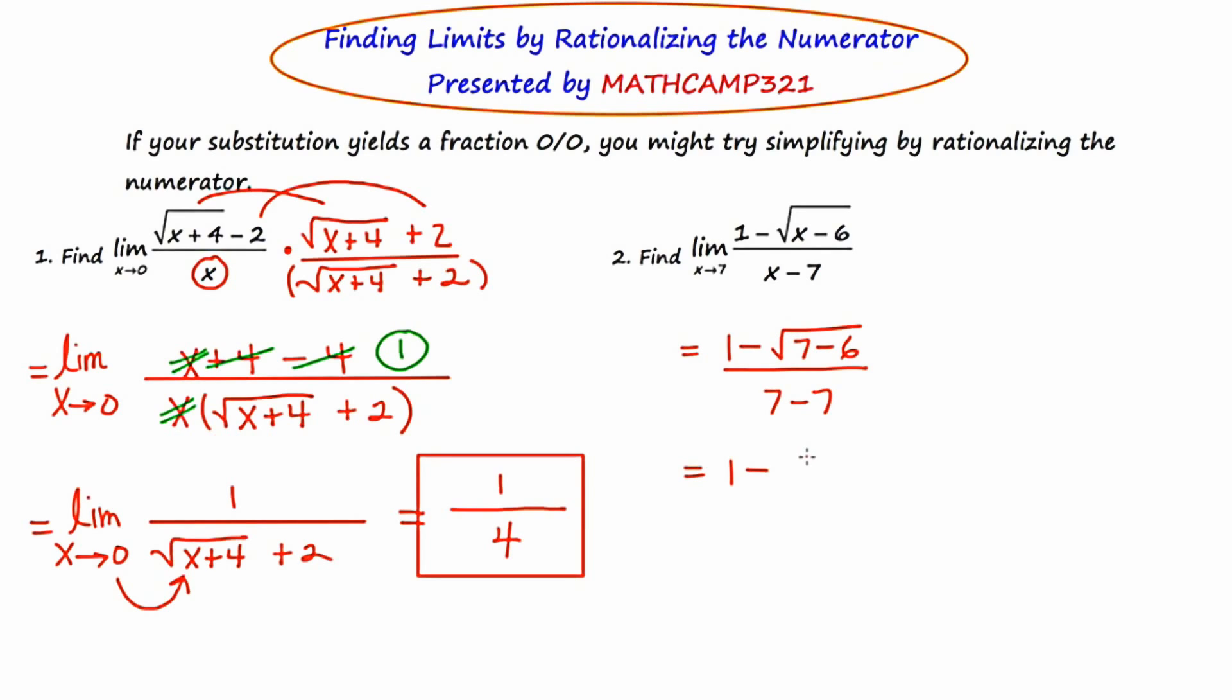Well, seven minus six is one, the principal square root of one is one. So that leaves us with the numerator of one minus one over seven minus seven. We all know where this is going. This is going to be zero over zero again, or indeterminate form. No good. Try something else. Okay, so I'm going to get rid of that scratch work so I can free up some space for doing the rationalizing of the numerator.